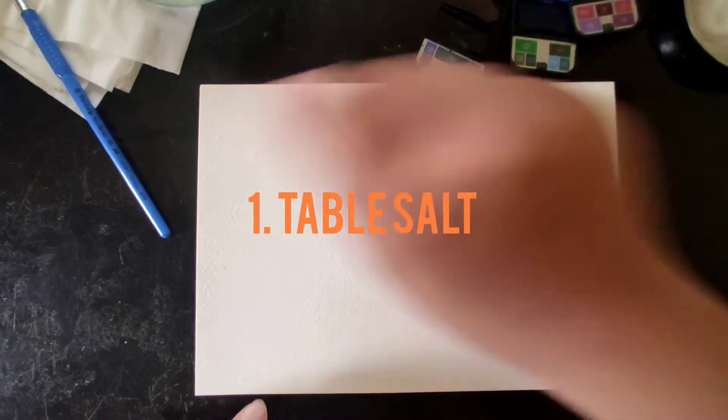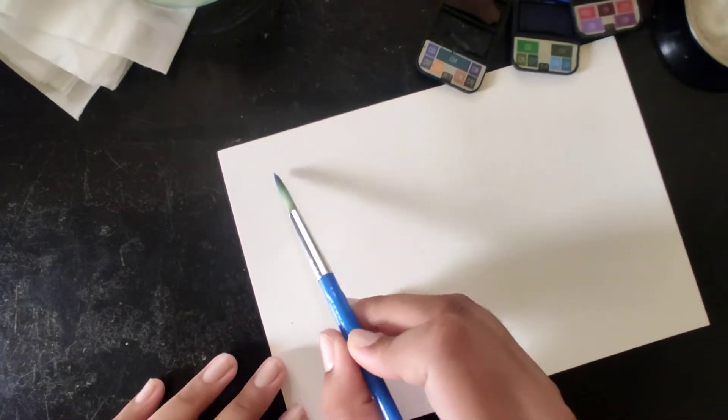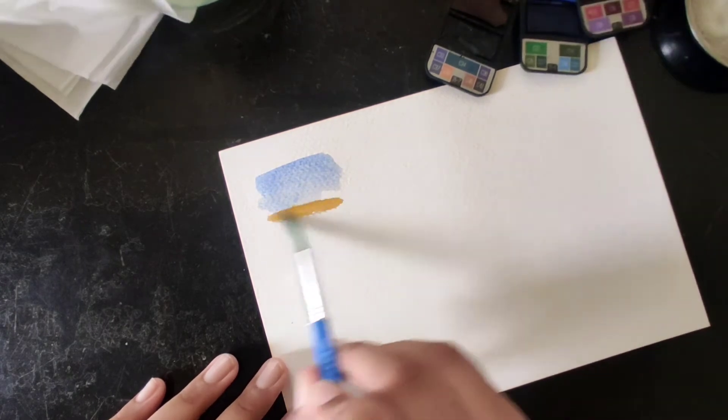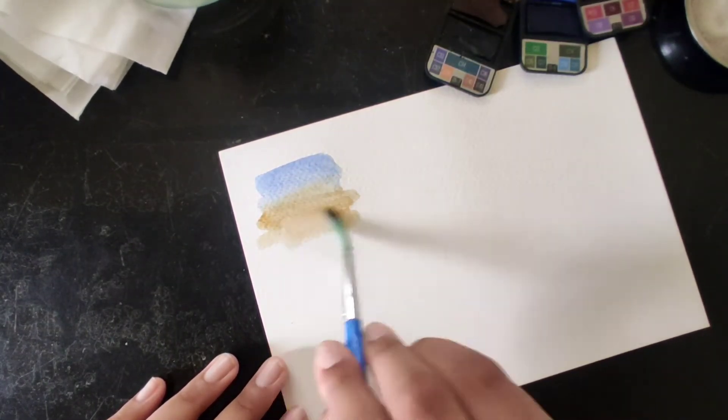For the first effect, I'll be using table salt. I'll link all the materials that I'm using today in the description box below. I'll be loading my brush with water and picking a color so that I can demonstrate the effect that it gives.